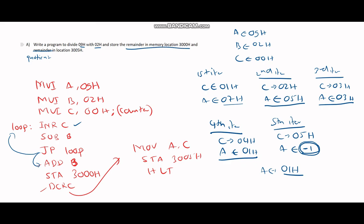I'm going to store this remainder in 3000H as asked in the question. It's already in the accumulator, so I can store this in 3000H using this code.